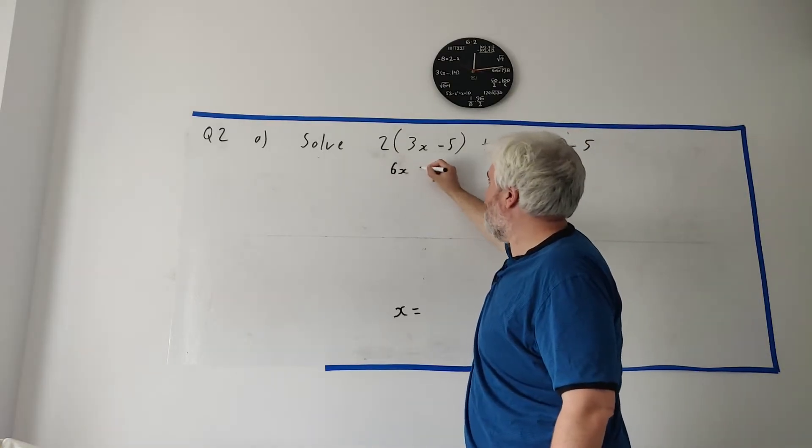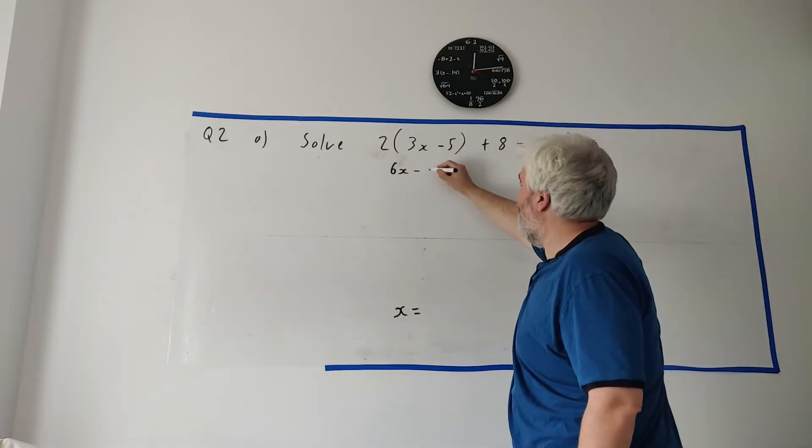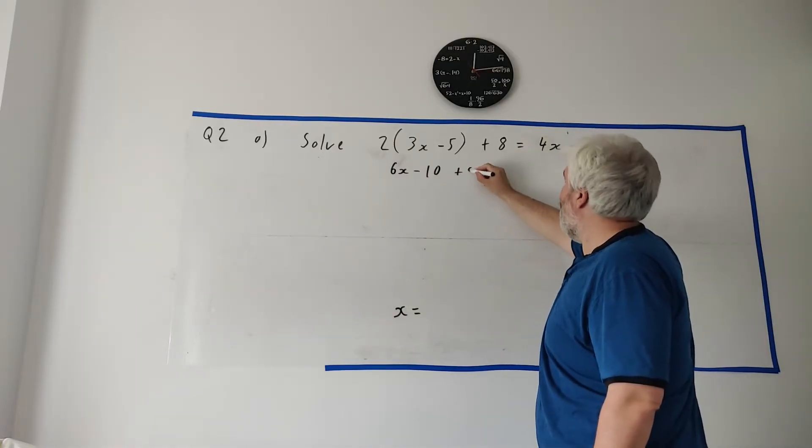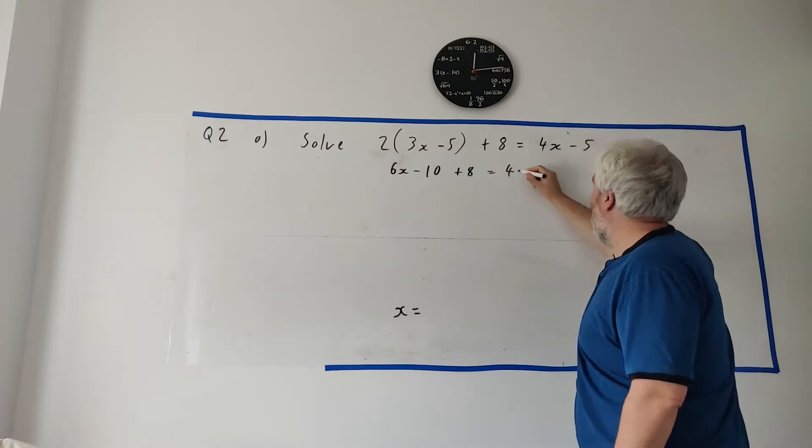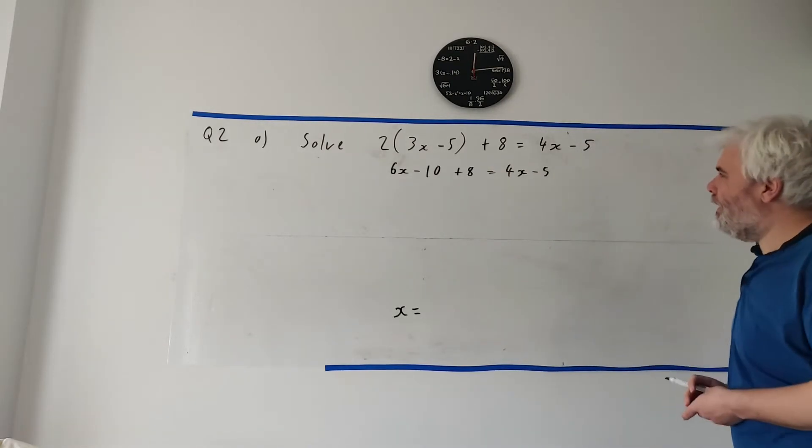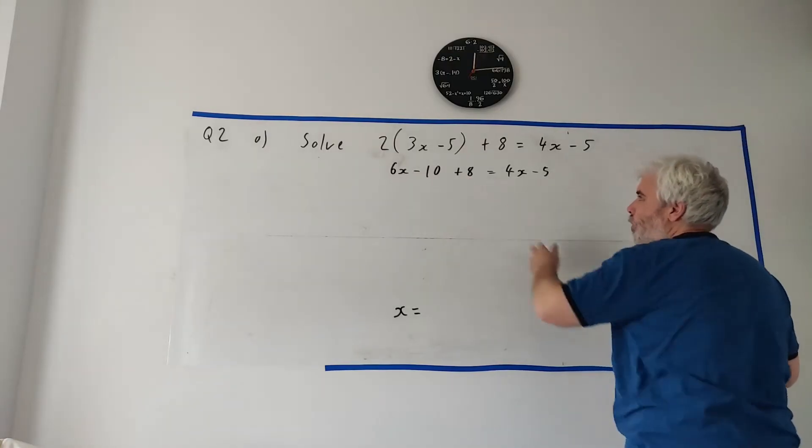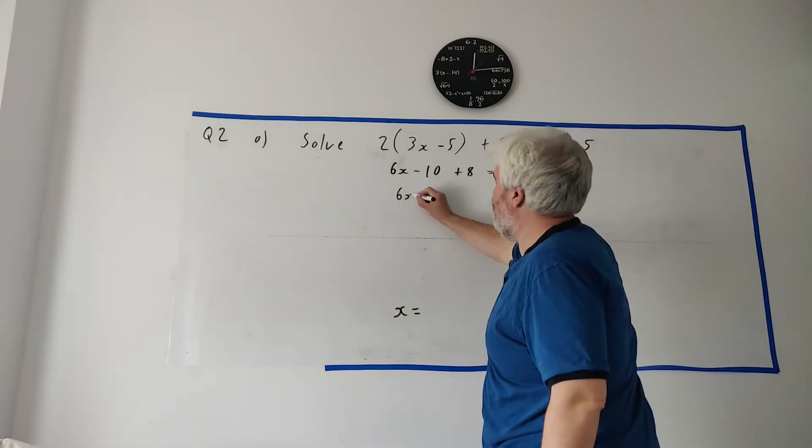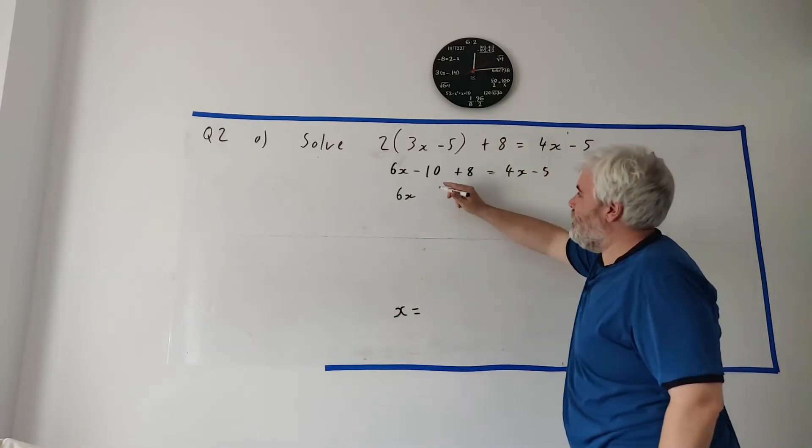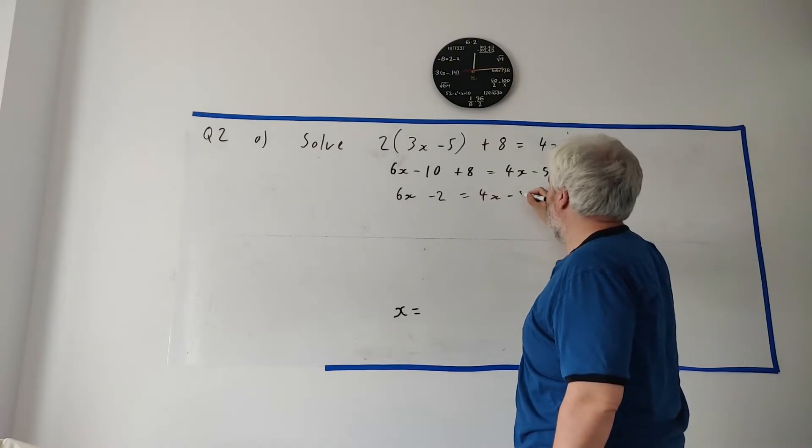2 times 3x is 6x minus 2 times minus 5 is minus 10 plus 8 equals 4x minus 5. What next can we do? We can combine some of these numbers. Minus 10 plus 8, that's easy enough. 6x, 8 minus 10 is minus 2, and that's equal to 4x minus 5.